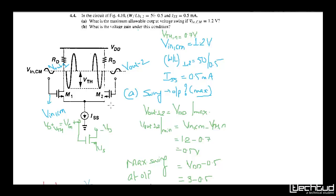So this is the input common mode that is given to you, and there is something called output common mode. What is given here is that W/L = 50/0.5, that is W/L = 100. Vin common mode is given as 1.2V, and ISS is 0.5mA. They have asked what is the maximum allowable output voltage swing if Vin common mode is 1.2V — so the input common mode is given.